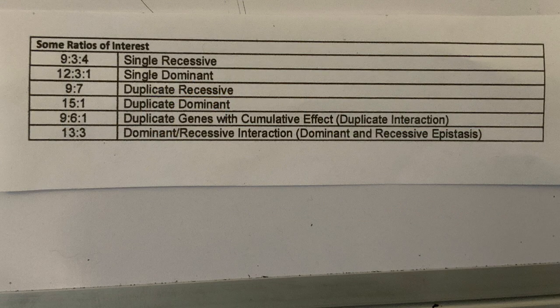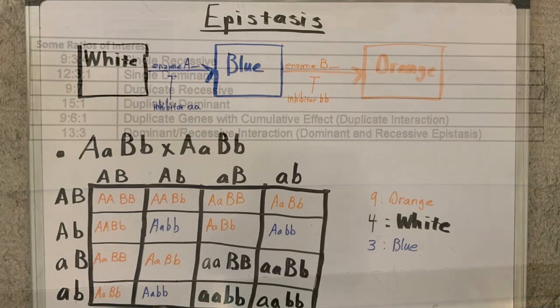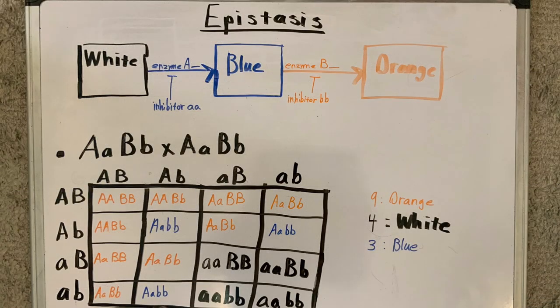Epistatic relationships follow a certain ratio in every type of epistasis. This is demonstrated by the cross between two parents who are heterozygous for both A and B alleles. The results of the cross are nine orange puppies, four white puppies, and three blue puppies.